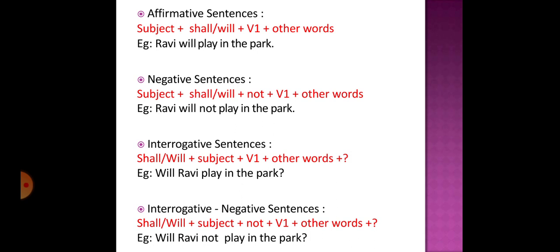Moving on to the negative sentence — in the negative sentence we add 'not' after 'will' or 'shall.' The sentence structure is: subject plus shall/will plus not, plus verb in the first form, plus other words. For example: 'Ravi will not play in the park.' Here 'not' shows the negation, and 'play' remains in the first form of the verb. This makes it a simple negative sentence.